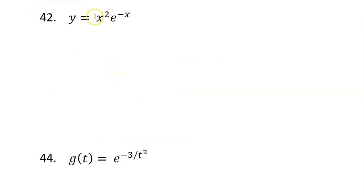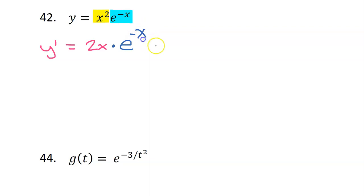We will be starting with the product rule again. We can view this as x squared times e to the negative x power. So our product rule says that y prime will equal the derivative of the first part, which is 2x, times the second part left alone, that is e to the negative x. Put a plus. The second time through, leave the first function alone and multiply by the derivative of the second part. But the derivative of e to the something is e to the something.